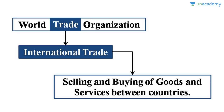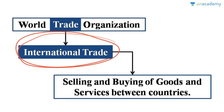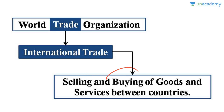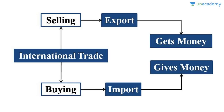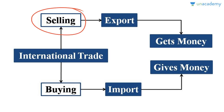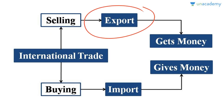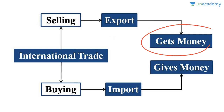The World Trade Organization, as the name suggests, deals with trade — and to be precise, it deals with international trade. By international trade, we mean the selling and buying of goods and services between countries. When a country sells something, we say that it is exporting, and when export happens, a country gets money.